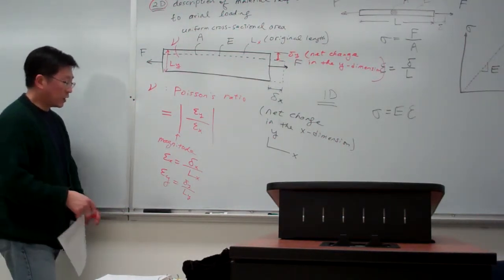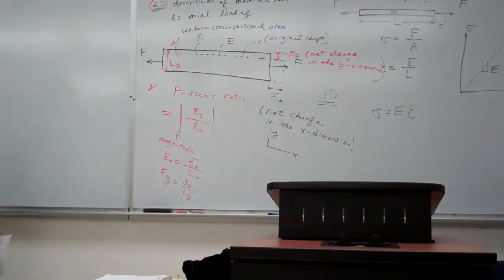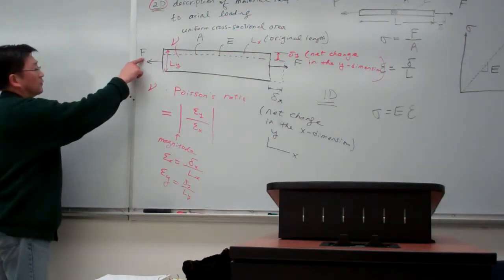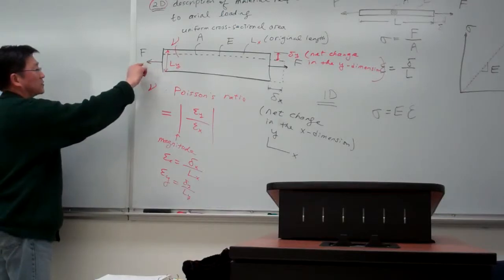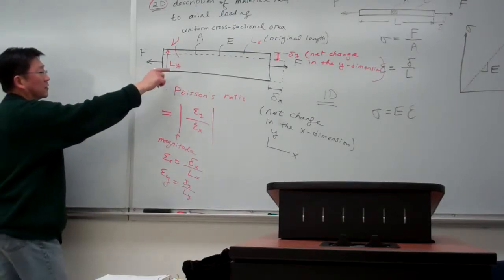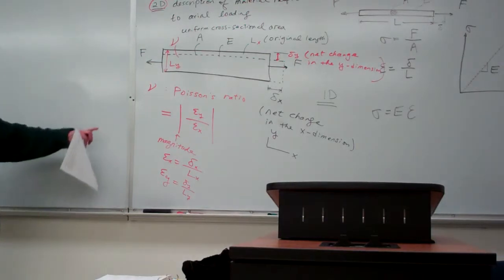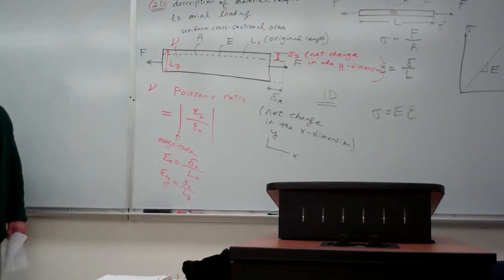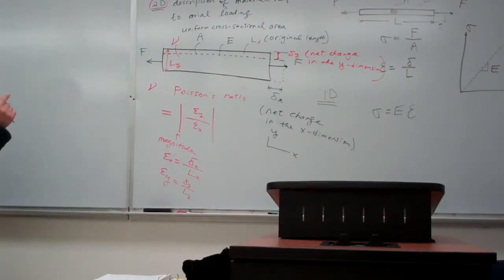In this way, we are able to measure the change in dimensions. When the force is applied in the axial direction, we get induced deformation in the lateral direction, and that is due to the Poisson's ratio.